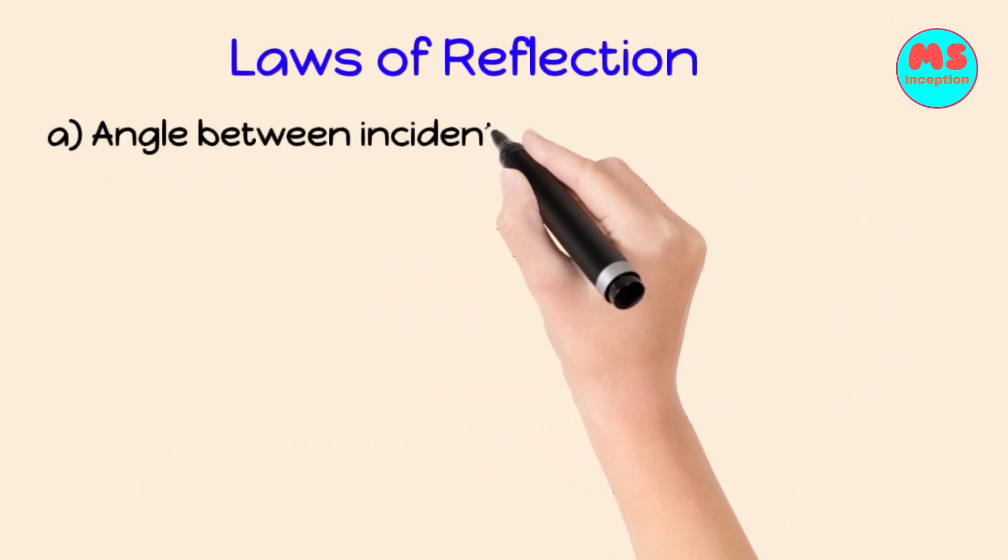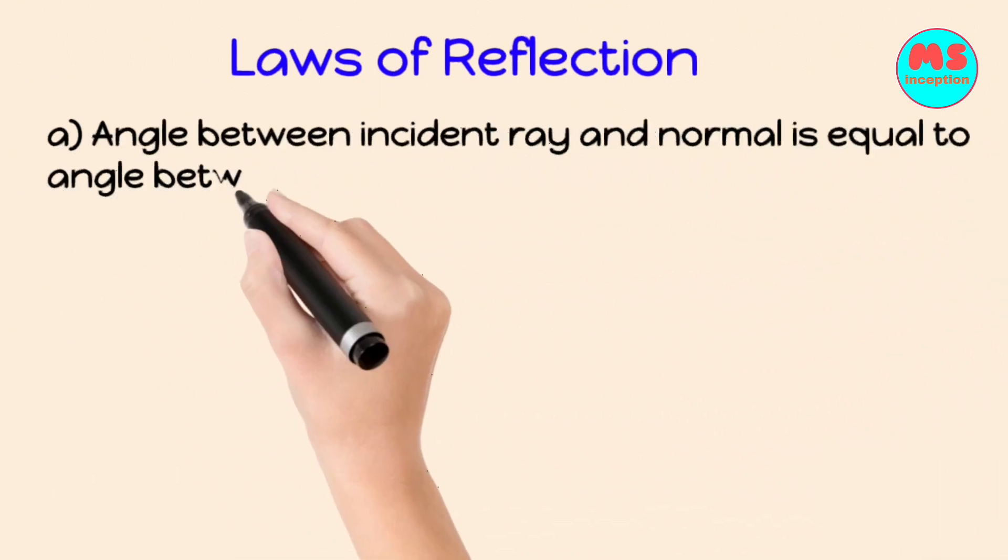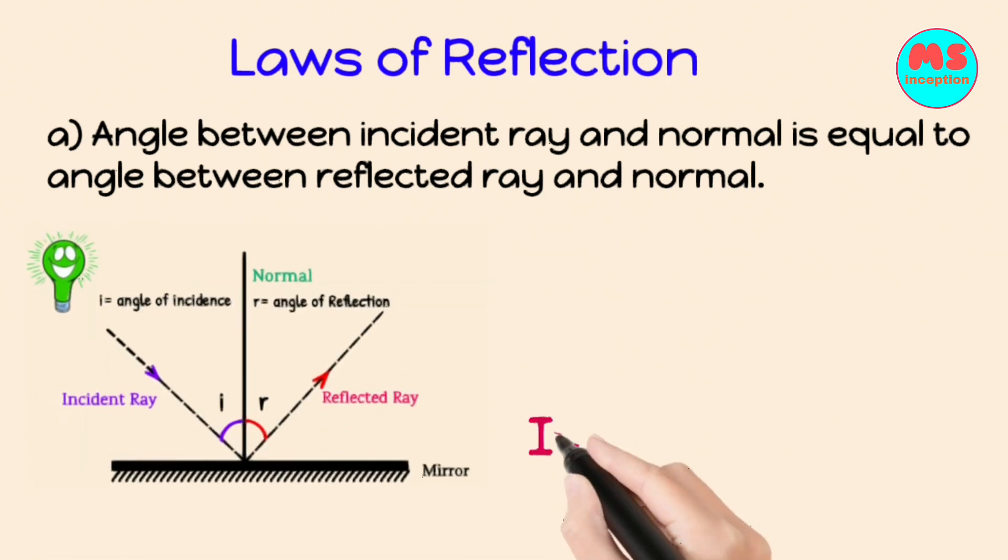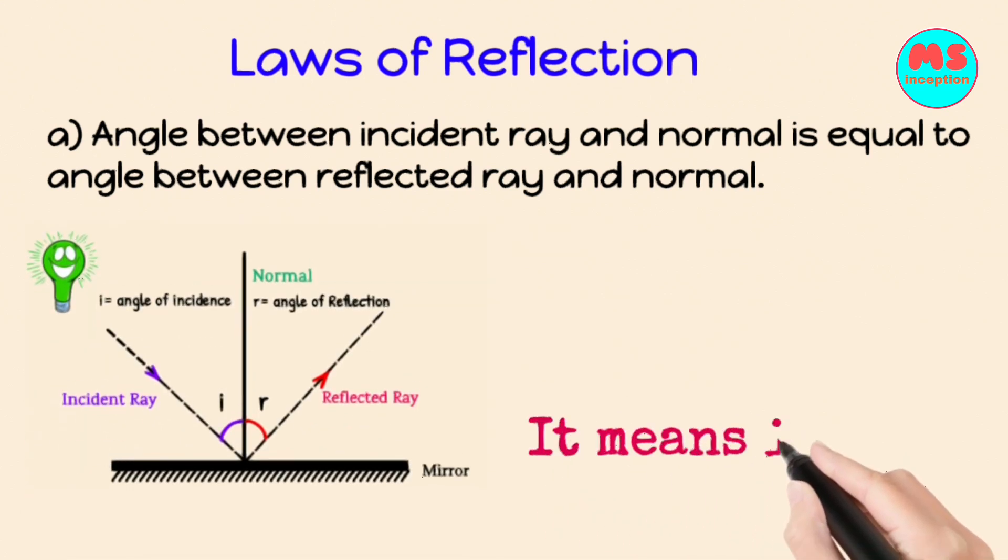Law of Reflection: The angle between incident ray and normal is equal to the angle between reflected ray and normal. Hence, I is equal to R.